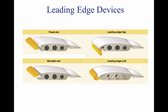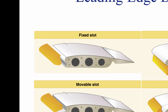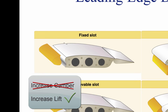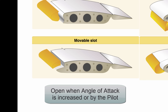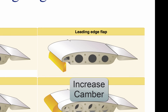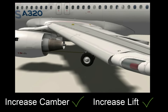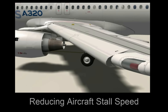High-lift devices may also be added to the leading edge of the wing. The four most common types are fixed slot, movable slot, leading edge flap, and leading edge cuff. Fixed slots delay airflow separation until a higher angle of attack, increasing lift without changing the wing's camber. The movable slot works similarly but opens when the angle of attack is increased or at pilot command. Leading edge flaps increase the wing's camber and are commonly used with trailing edge flaps to reduce the nose-down pitching tendency. Leading edge cuffs increase camber and lift by pushing the front edge of the wing down and forward, allowing more air to connect with the upper surface at higher angles of attack, thus reducing stall speed.